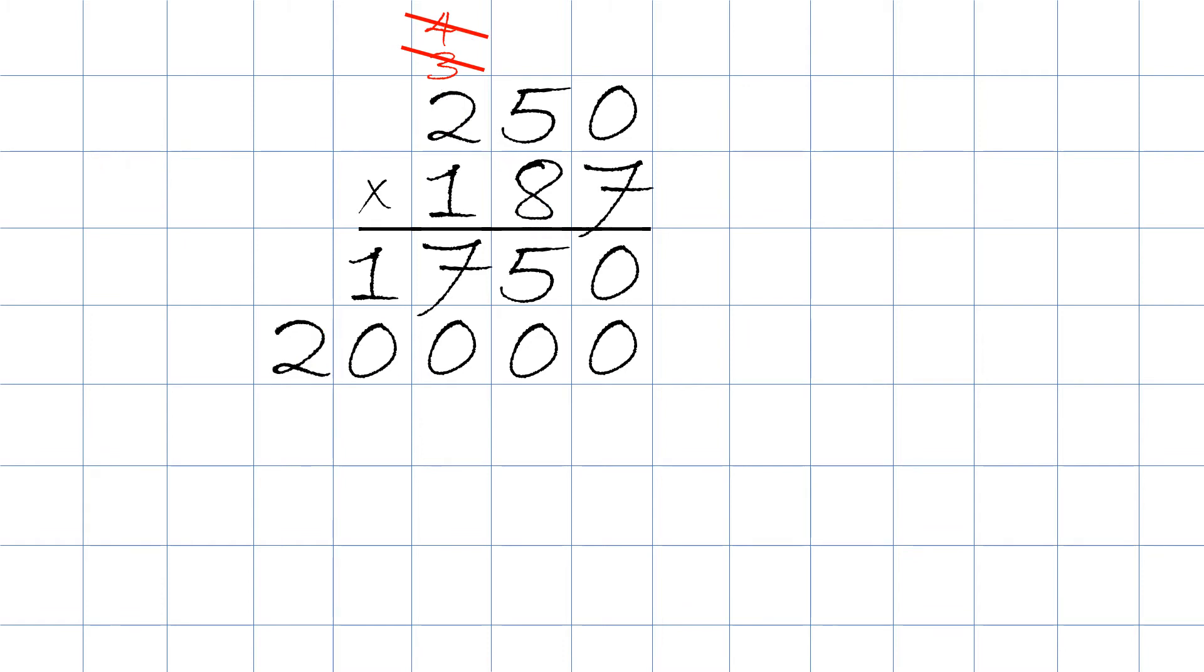Now this is where 90 percent of the problems happen. We have to add not one zero but two zeros. So one zero goes up here, the second zero goes up here. Then we take one times zero, will be zero, and we put it right up here.